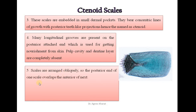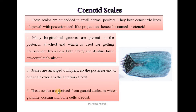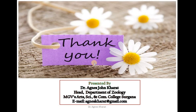Scales are arranged obliquely so the posterior end of one scale overlaps the anterior of the next. These scales are derived from ganoid scales in which ganoin, cosmin, and bone cells are lost. Thank you.